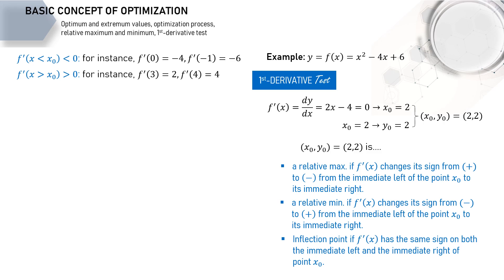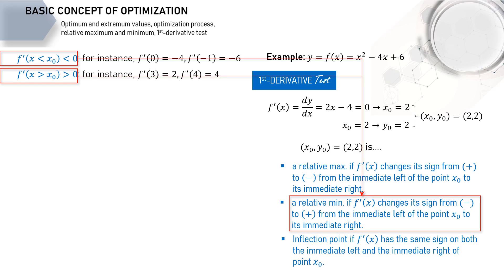So what's the conclusion? Since f'(x), the derivative, changes its sign from minus to plus — from the immediate left of point x₀ to its immediate right — then the stationary point (2, 2) is a relative minimum.